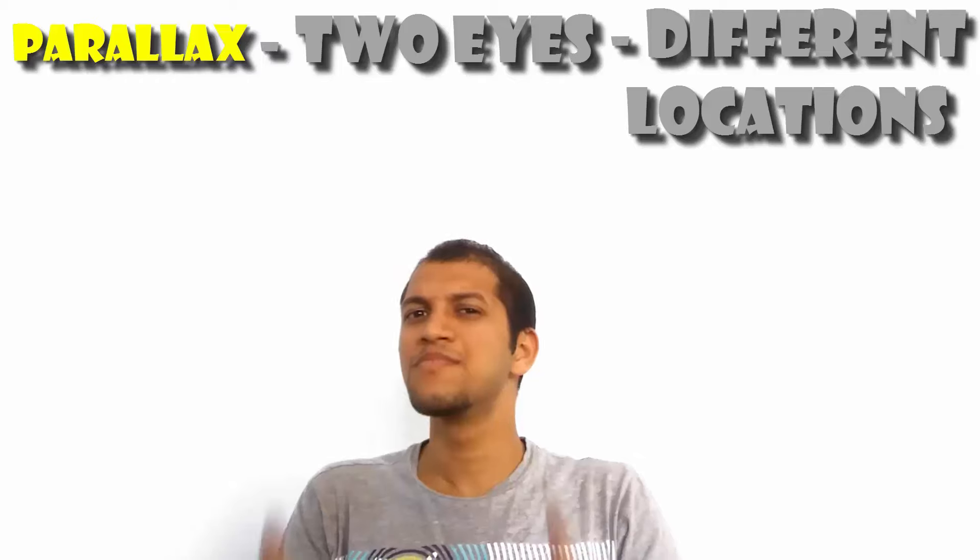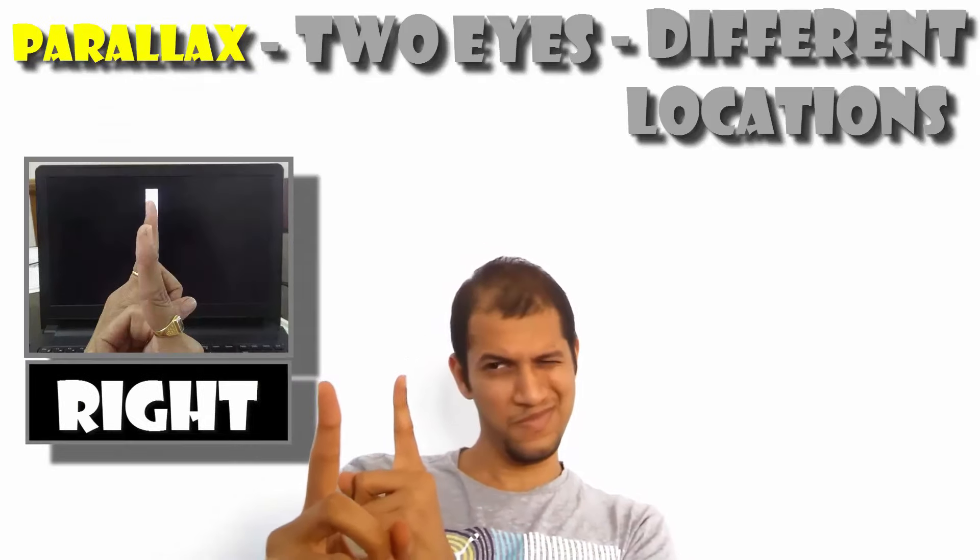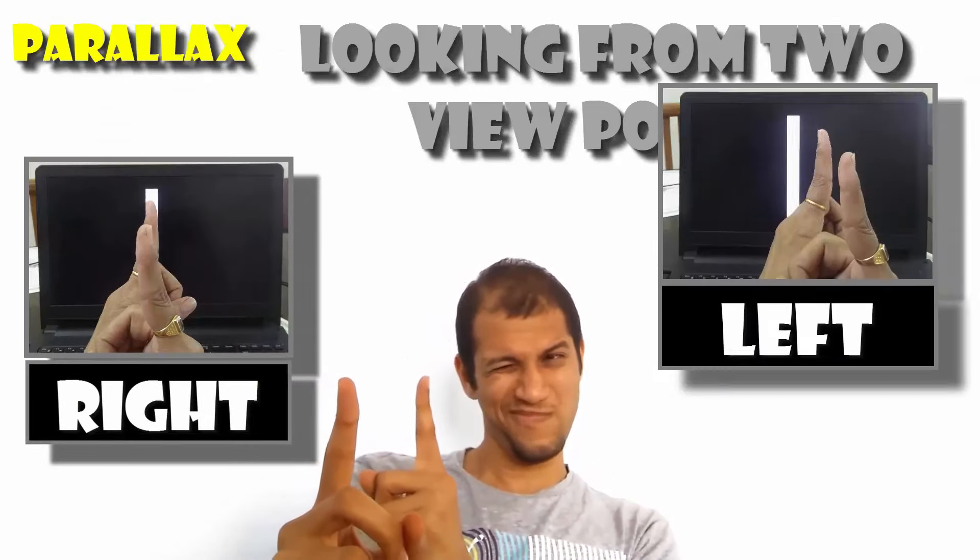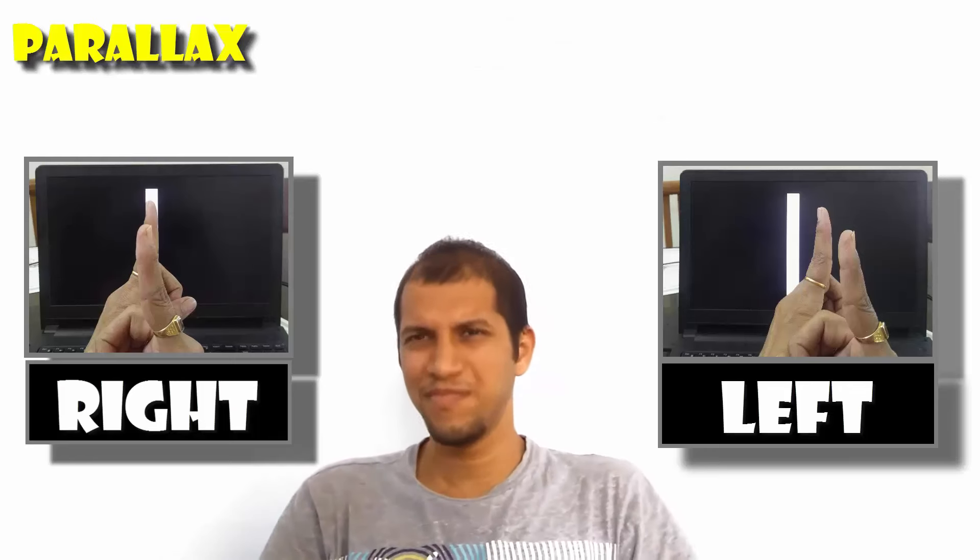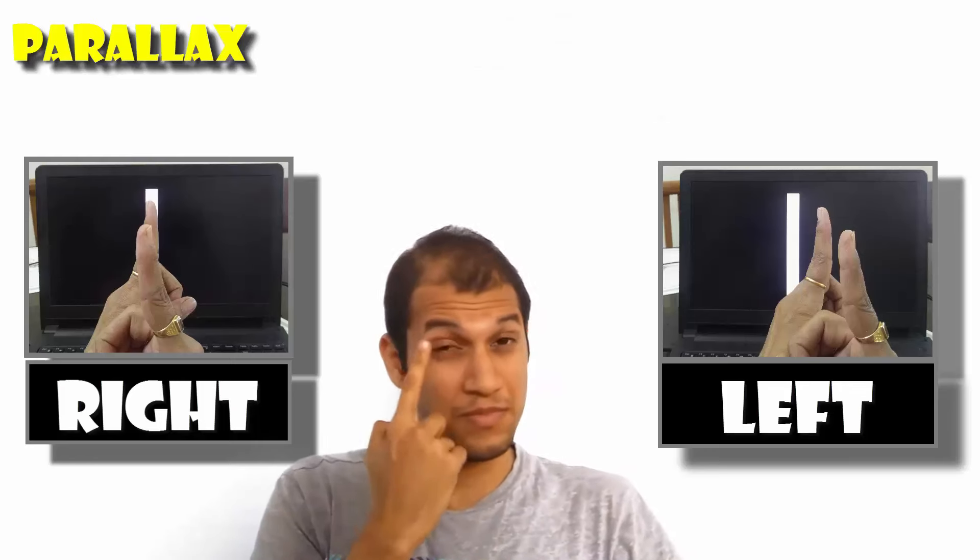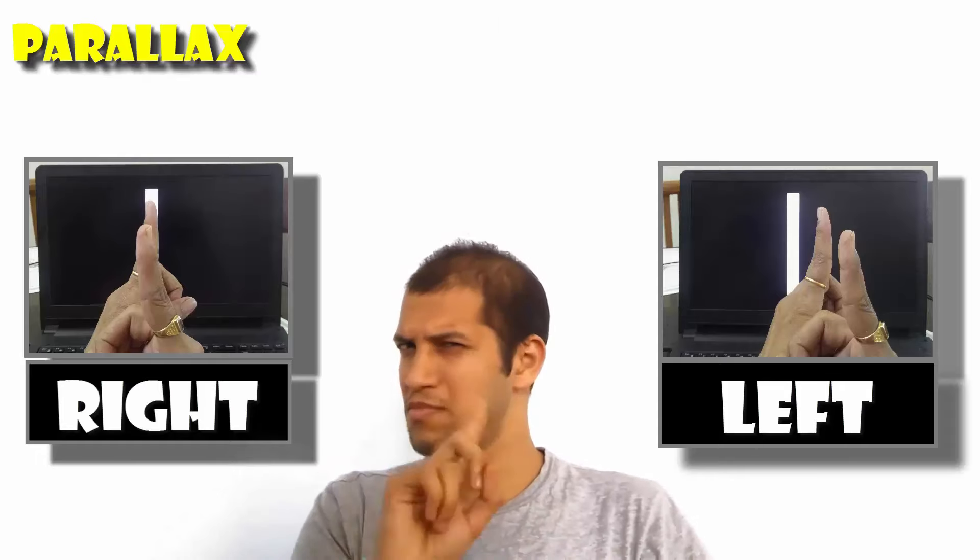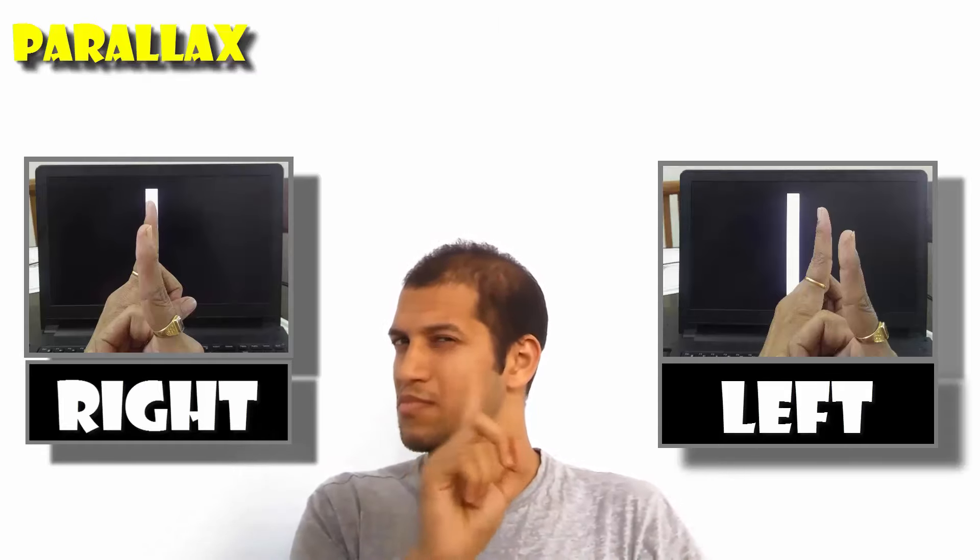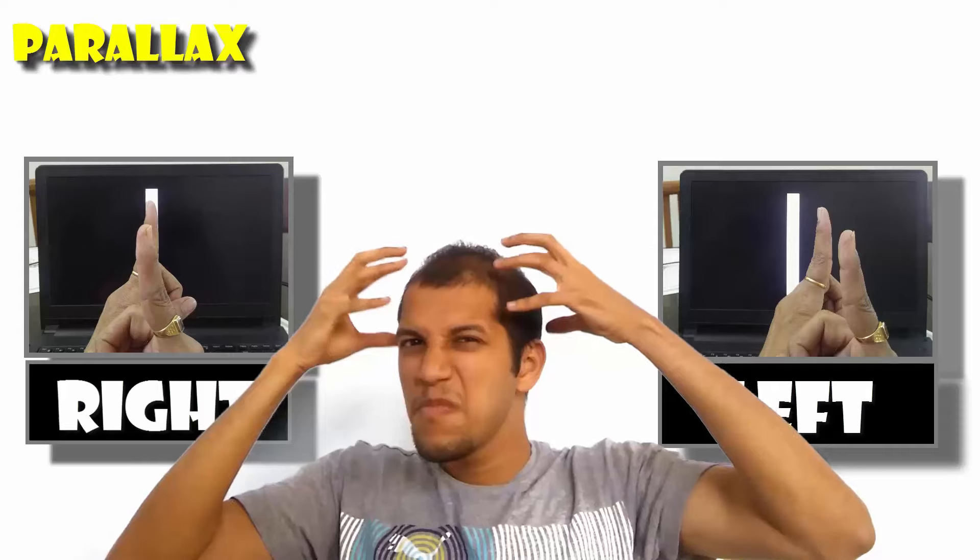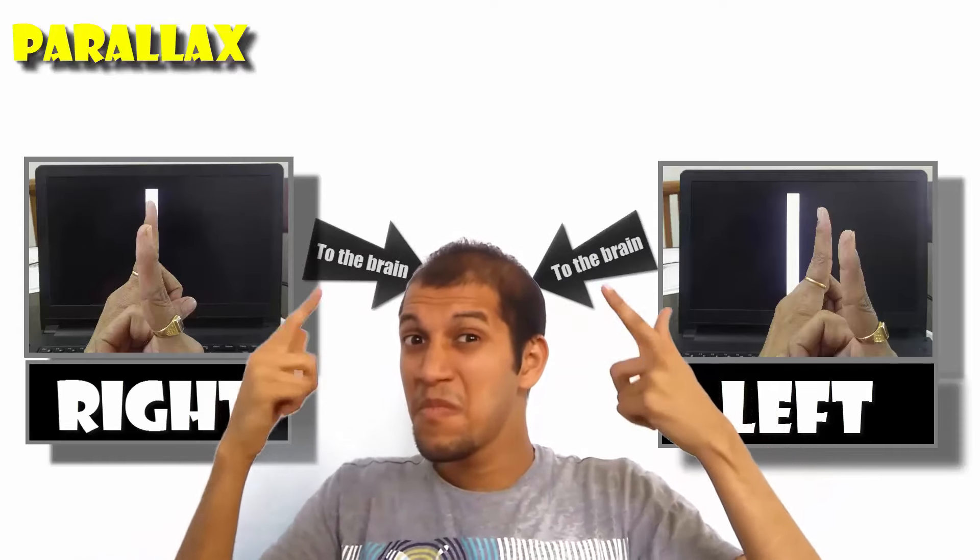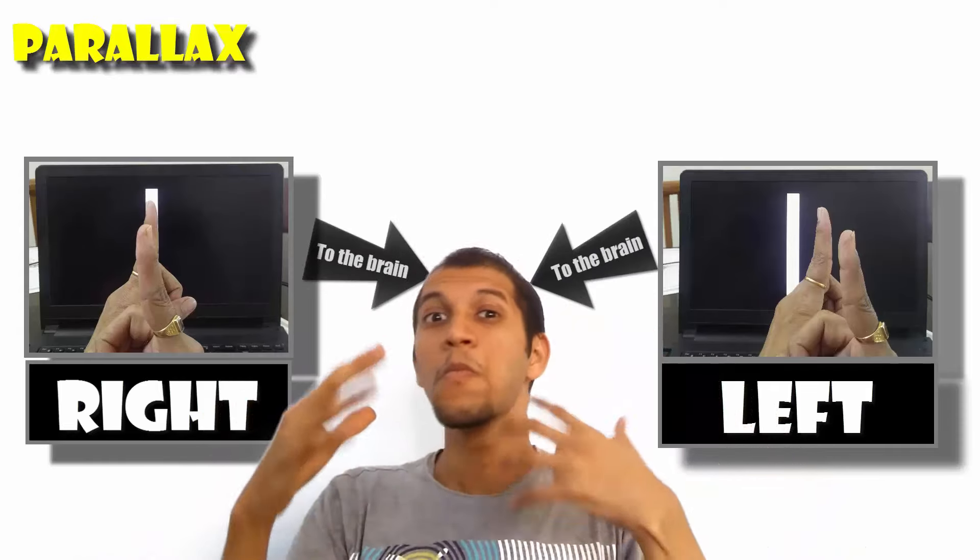Basically, you're looking at things from two different viewpoints, the right and the left. The line and the two fingers were aligned from your right eye's point of view, but not from the left eye's point of view. Your brain uses this difference in the images formed in the two eyes to understand depth.